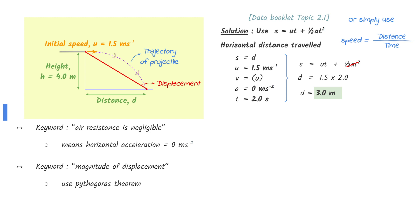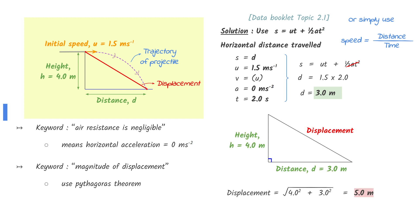First, use the equation given in the data booklet to find the horizontal distance traveled. The distance can also be found by simply using speed equals distance over time, since the horizontal acceleration is zero. The vertical distance moved is 4.0 meters, and the horizontal distance moved is 3.0 meters.